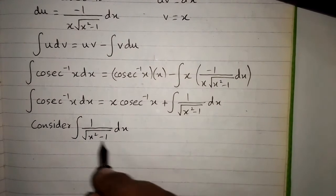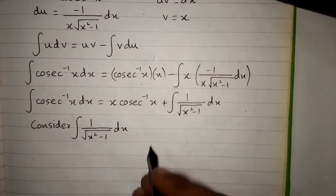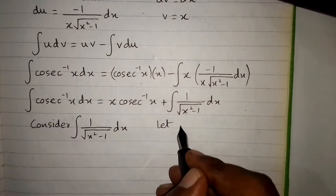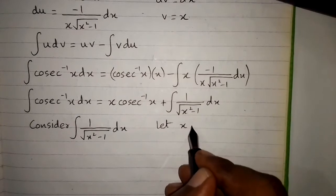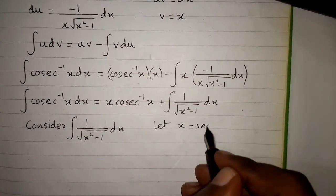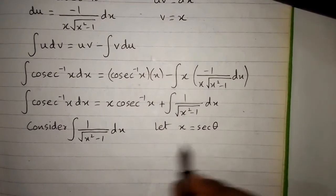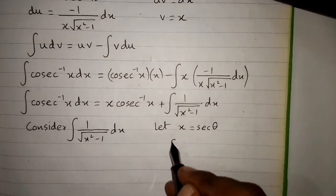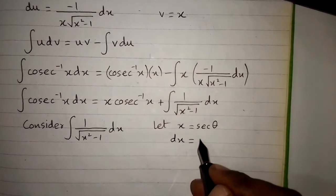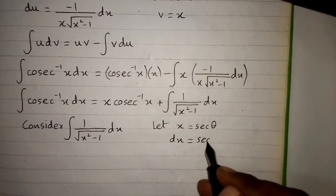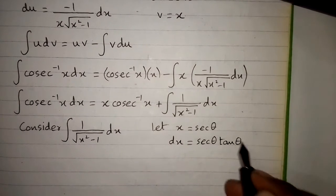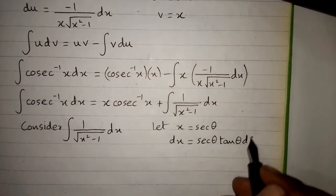In order to integrate 1 over the square root of x squared minus 1, let x equal to sec θ. Then the differential dx equals sec θ tan θ dθ.